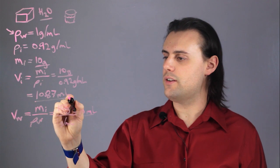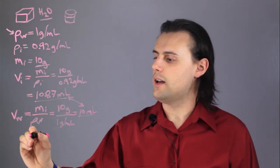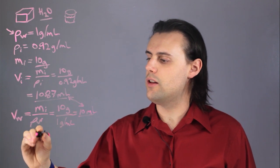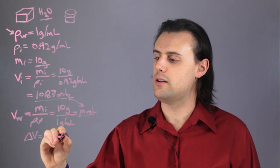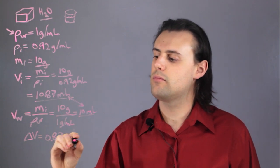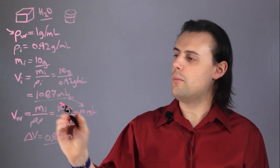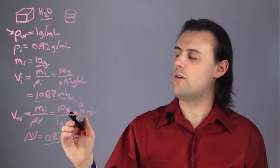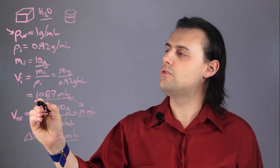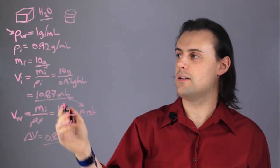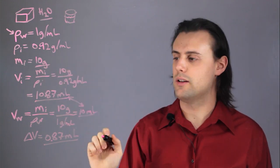And if I look at the difference between these two volumes, I end up with a difference in volume equal to approximately 0.87 milliliters, which is almost 1 milliliter. So, almost 10% more volume is taken up due to the ice expanding, because it has a smaller density than the water does.